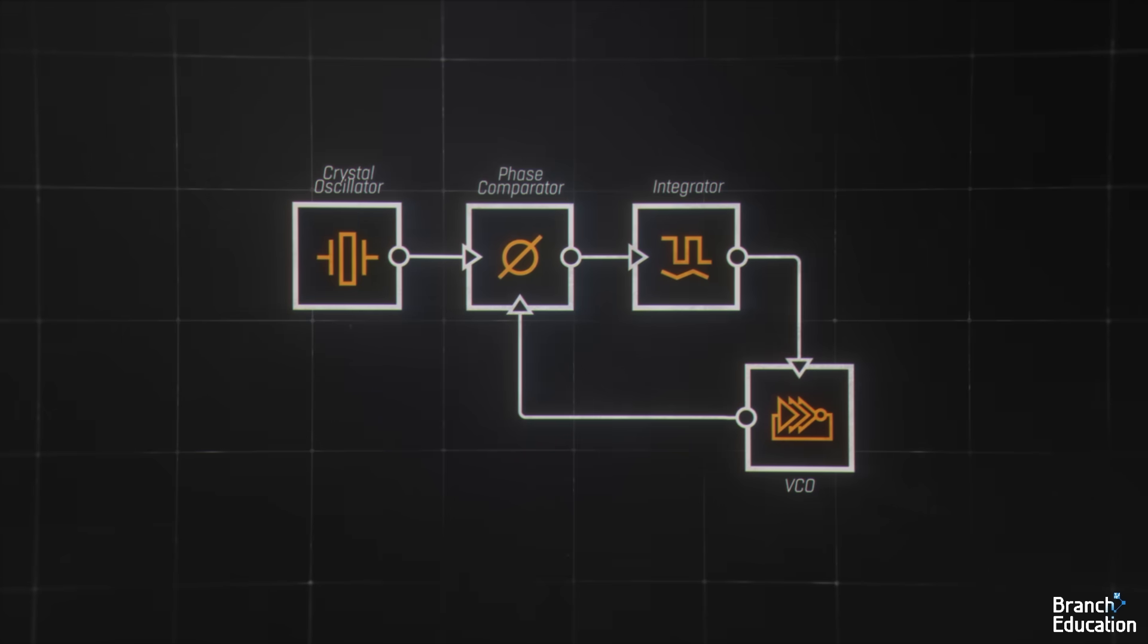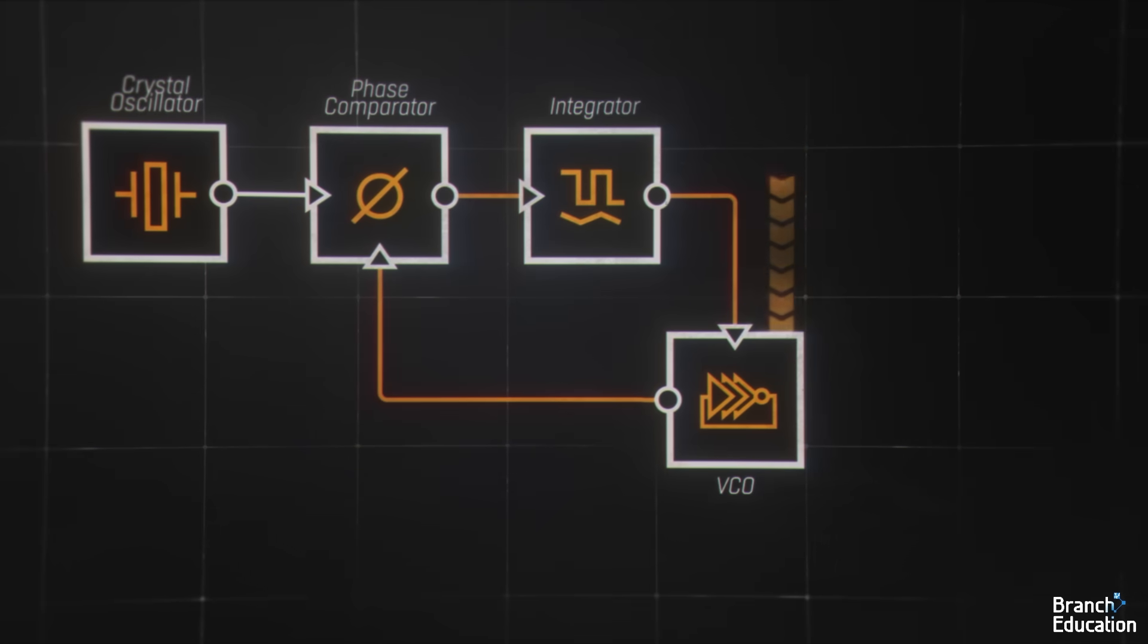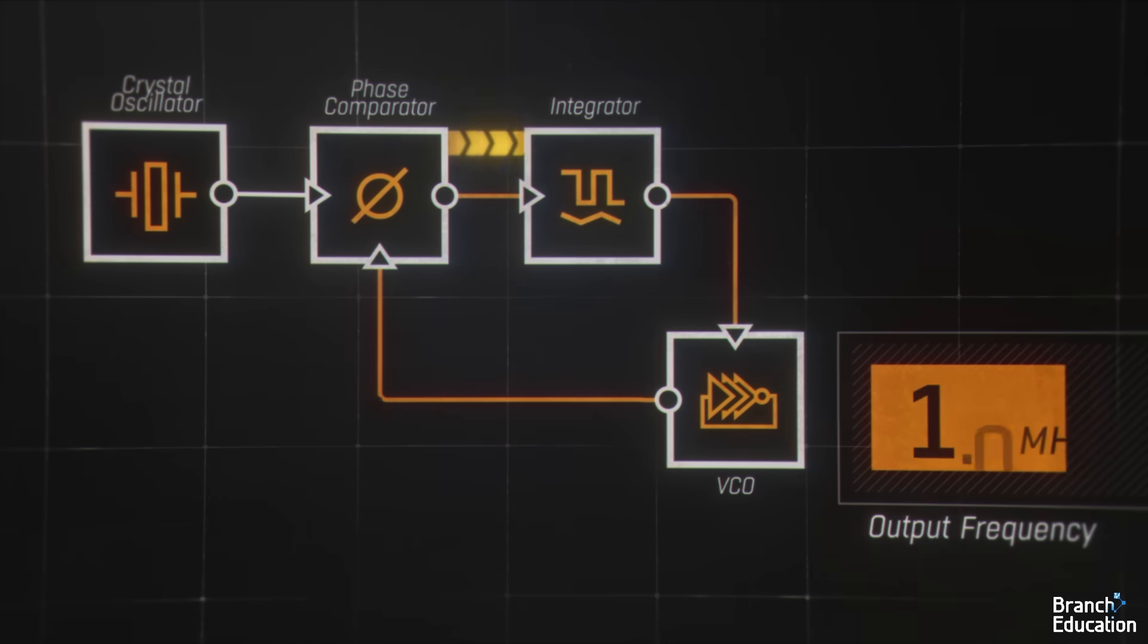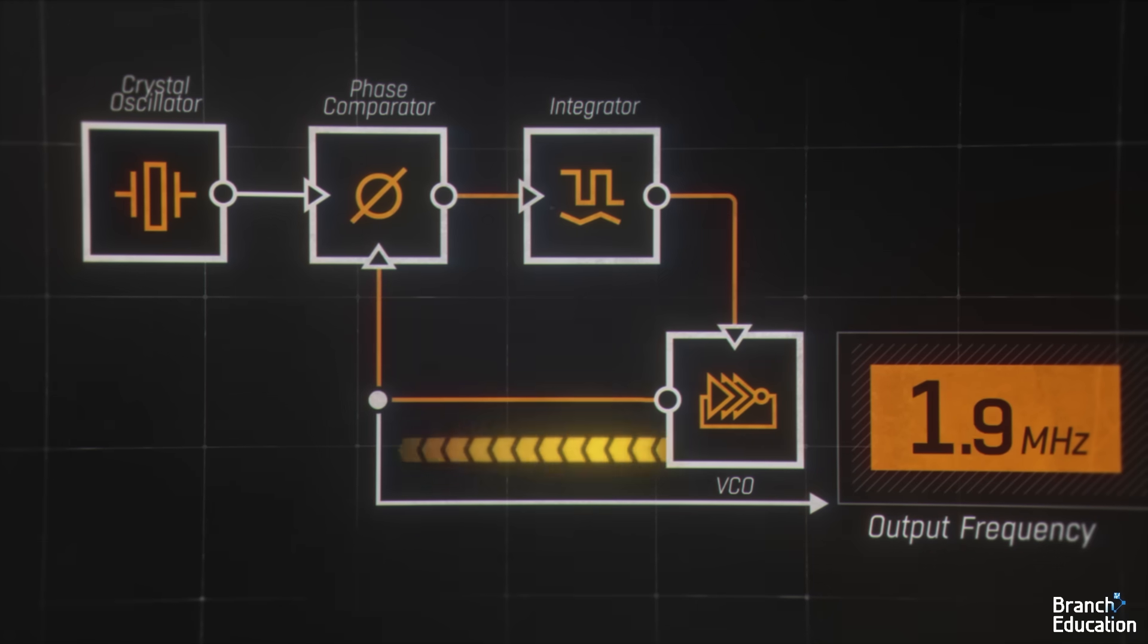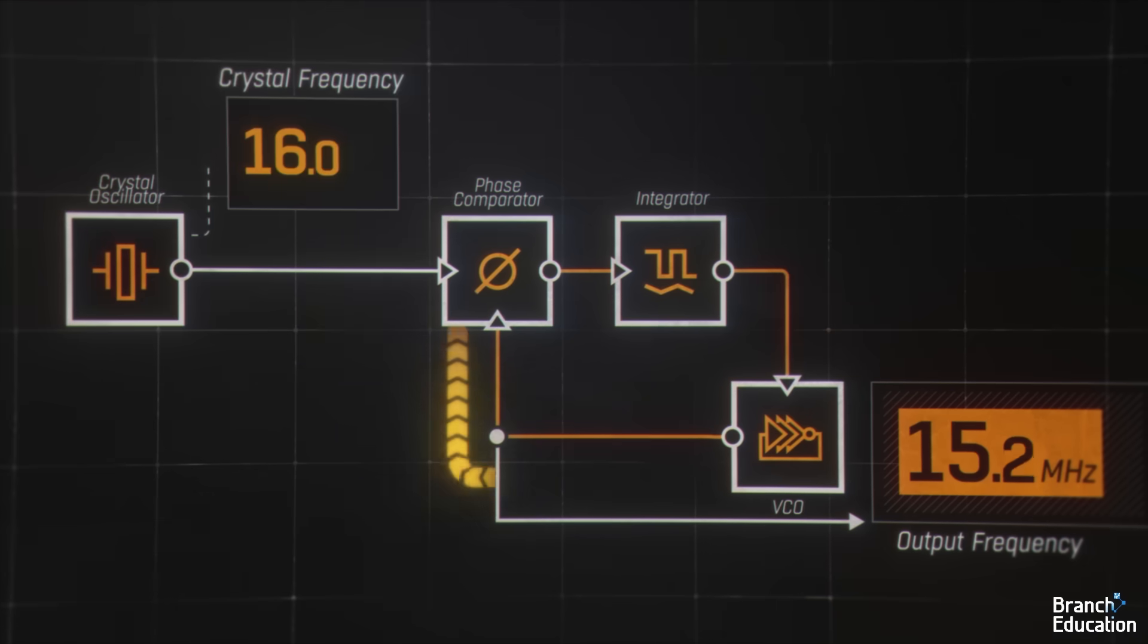Finally, this frequency is fed back into the frequency and phase comparator and, as it is, the feedback loop will drive the ring oscillator to match and be identical to the output from the 16 megahertz crystal oscillator loop.